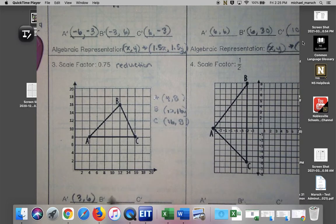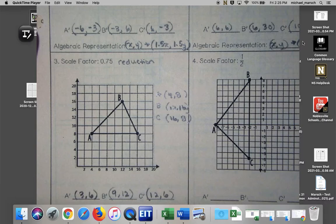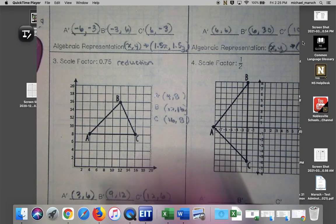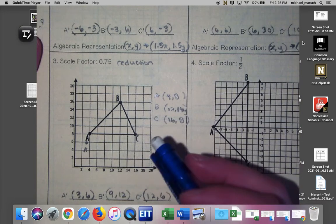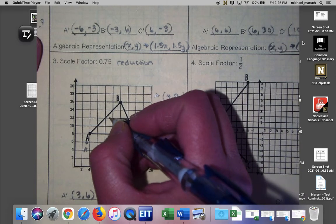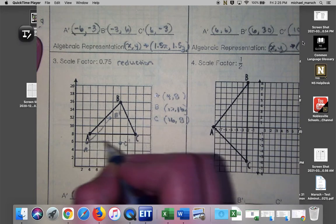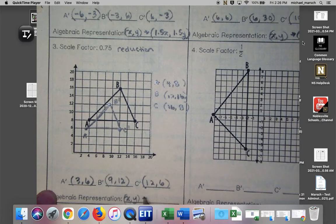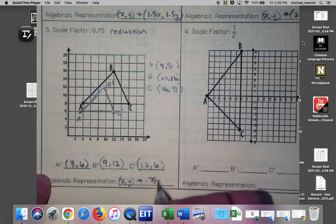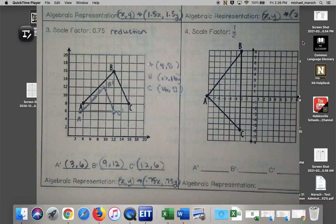We have to save some time here, so I'm just going to give you those. So we've got a slightly smaller triangle. And then my algebraic representation, xy, turns into 0.75x, 0.75y. You guys are now dilation experts. Nice work.